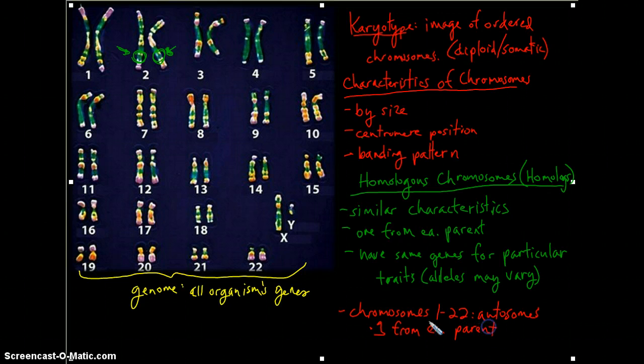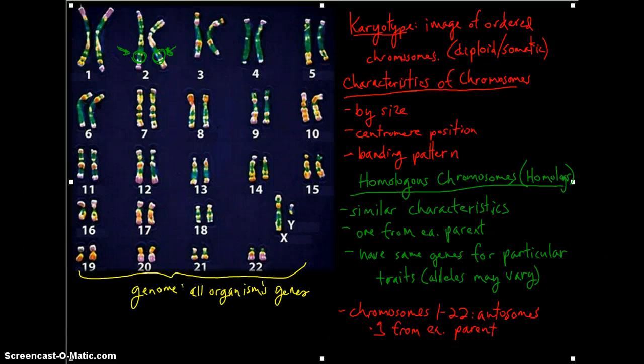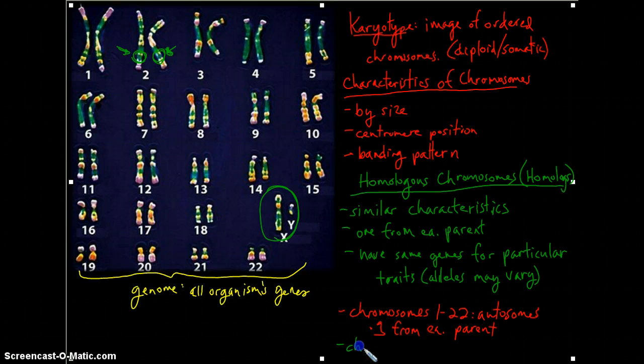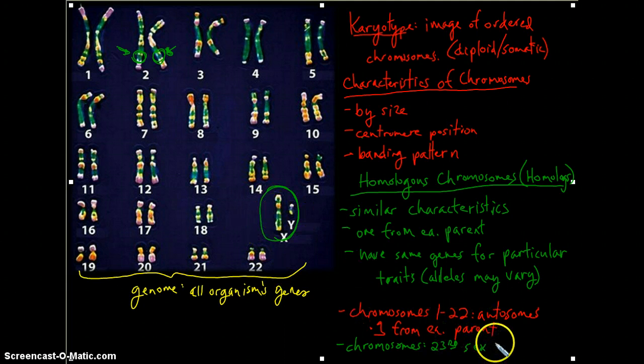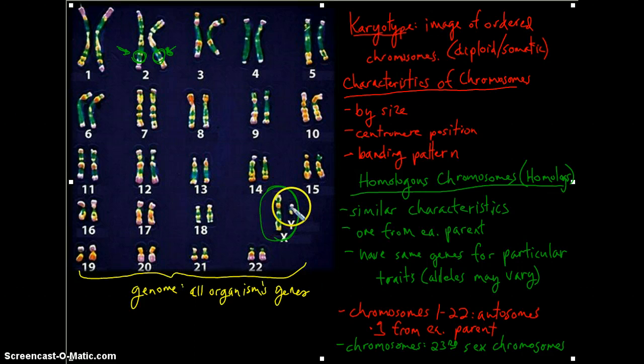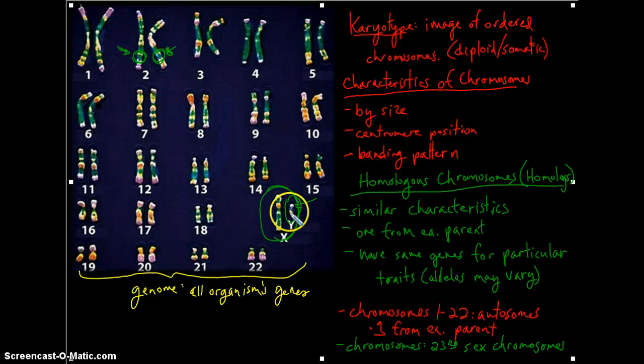They are homologous. Now, this final pair here is special. This 23rd pair are the sex chromosomes. So the sex chromosomes are not necessarily homologous, because you can get, in the case of males, an X chromosome and then a Y chromosome from the father. So these are not homologous. But this 23rd pair determines the sex of the individual.